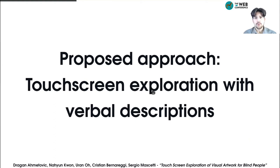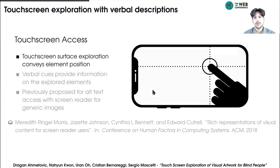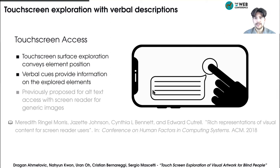The approach proposed in our work is to leverage web-based touchscreen interaction coupled with verbal descriptions on commodity mobile devices in order to enable inclusive artwork appreciation for blind people and other art venue visitors. The idea is that by moving the finger on the touchscreen, the position of the explored areas can be conveyed through proprioceptive sensing. Concurrently, verbal cues can provide notifications about the presence of elements of interest at the explored areas and their descriptions. Thus, a blind person could understand the structure of the artwork image displayed on the touchscreen.